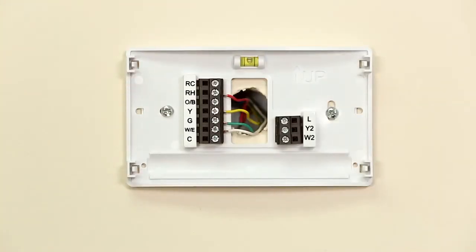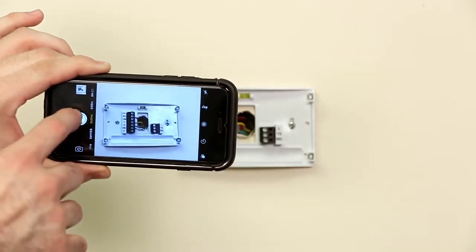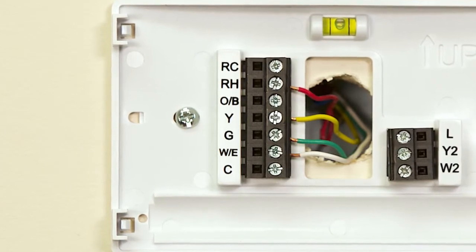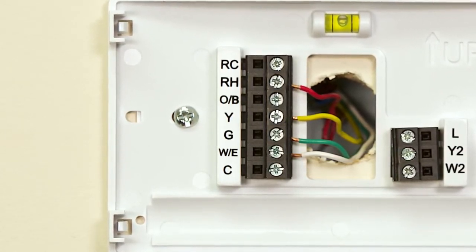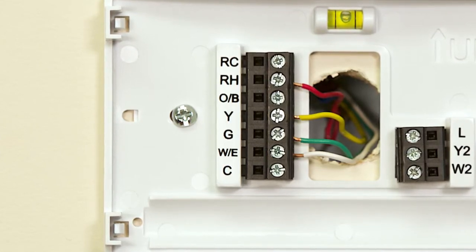Remove your current thermostat from your thermostat base plate. Be sure to take a photo of the current wire connections for reference. Also, keep in mind that the wire colors are not important. Your color scheme may be different from ours. The important part is to pay attention to which terminals each of the wires are connected to.